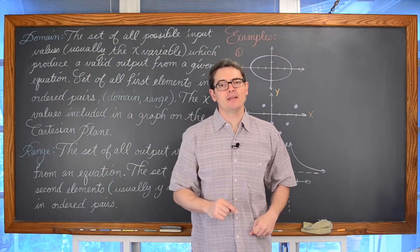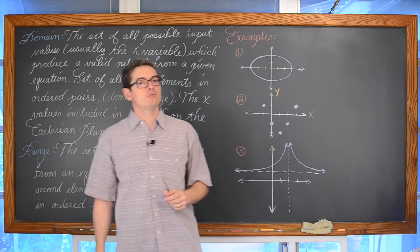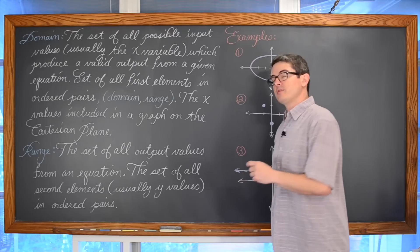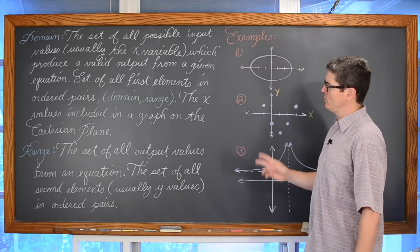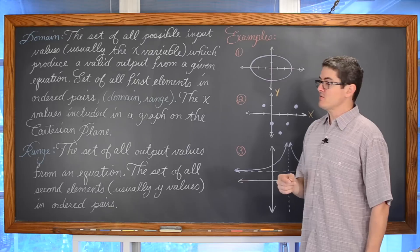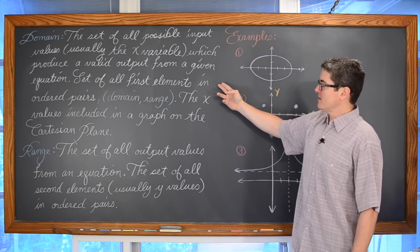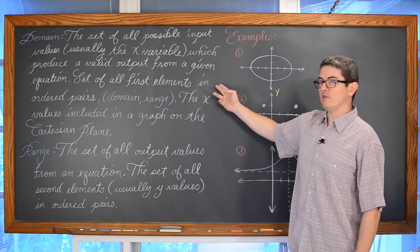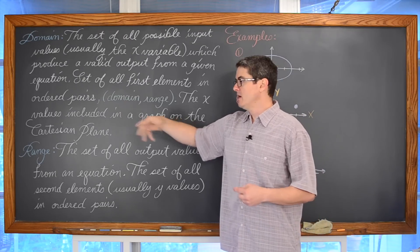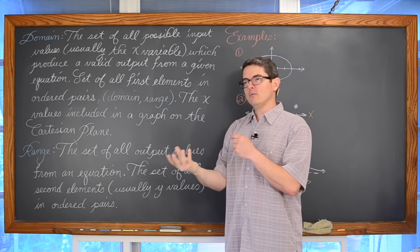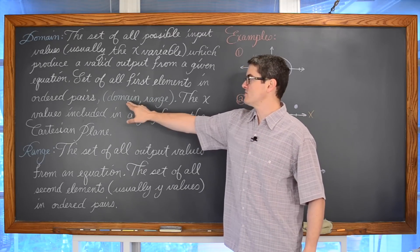So you want to identify what domain and range is. When you look at the graph of an equation, you are going to have to know the definitions. The domain is the set of all possible input values, usually the x variable, which produce a valid output from a given equation — or you can say it is the set of all first elements in ordered pairs. Ordered pairs are a grouping of two numbers.